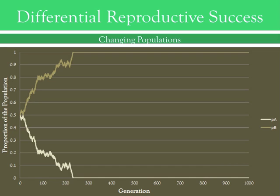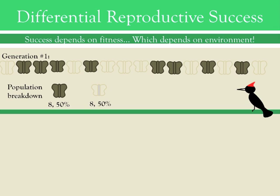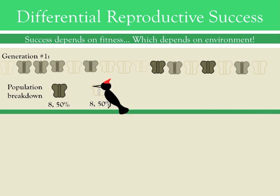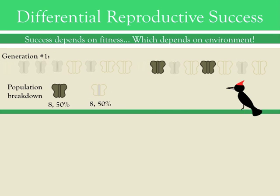It is important to remember that fitness, although genetically encoded, is also highly dependent on the nature of the environment. For example, the same dark coloring which endowed moths with greater fitness against a dark background would be a liability against a light background. In this case, lightly colored moths are more fit and natural selection will drive the population towards their greater prevalence.